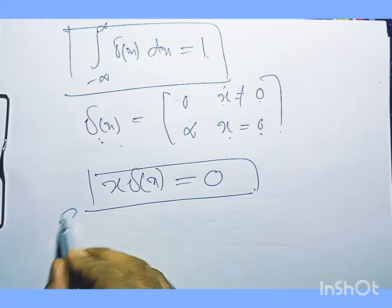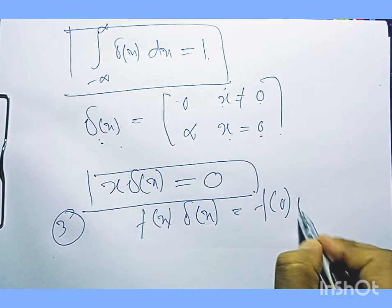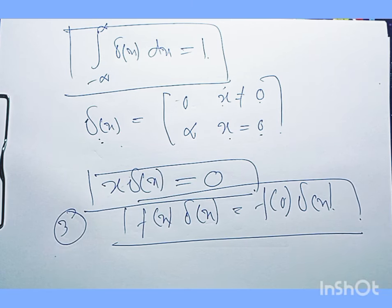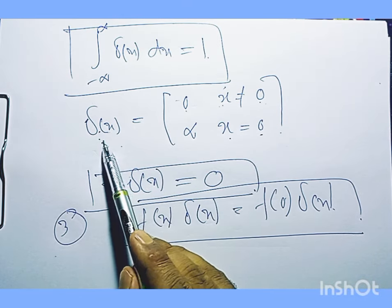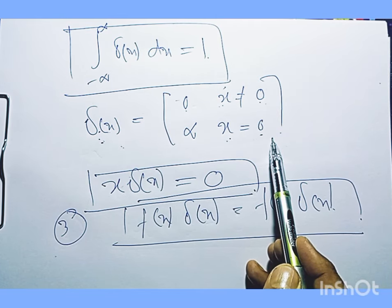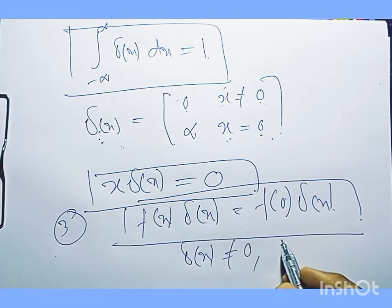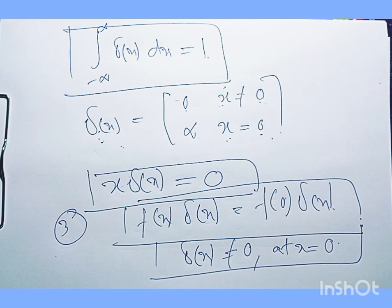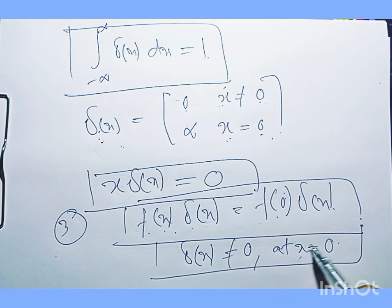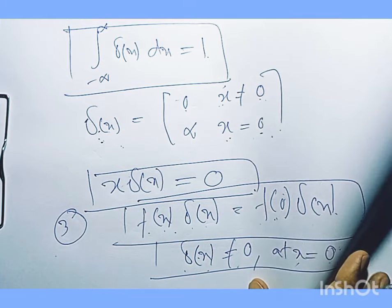The next property is: f(x)·δ(x) = f(0)·δ(x). We can prove this using the basic definition. Since δ(x) is zero for x not equal to zero, and is nonzero only at x equals zero, we can use that property of the Dirac delta function to proceed with this equality.